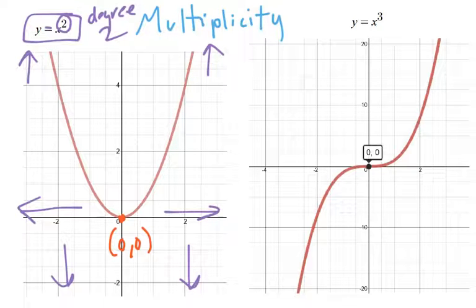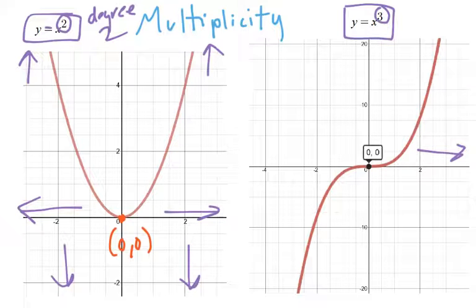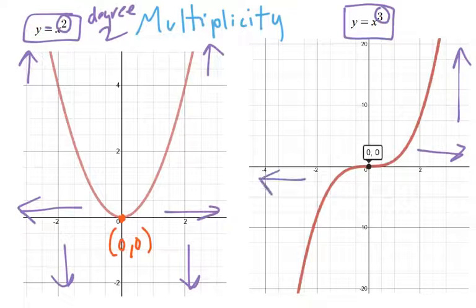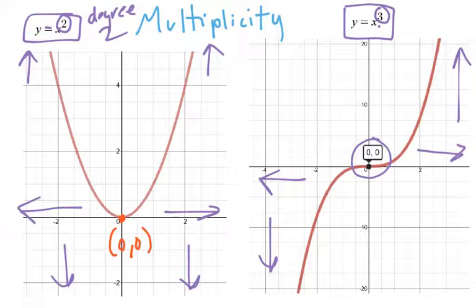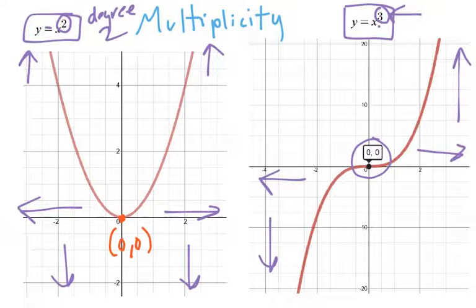Same idea with the parent function x cubed. Degree of three tells me as I go to positive infinity, our end behavior is infinity. As we go to negative infinity, our end behavior is infinity. If we made that negative, it would go the opposite — start up here and go down. But if we look at our zero, our x-intercept, we only have one. We should have three. The fundamental theorem of algebra says we should have three, but we only have one. So what's going on here? It has to do with this thing called multiplicity with our zero.